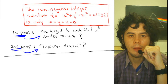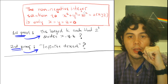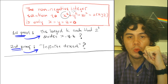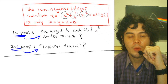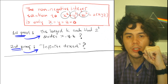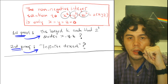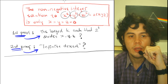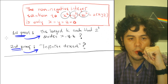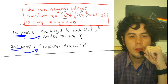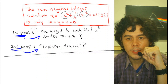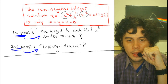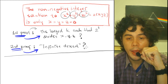Here I have a number theory statement: the non-negative integer solution to x squared plus y squared plus z squared equals 2 times x times y times z is only x, y, and z all equal to 0. That is the only solution to this equation. I will prove this statement using two kinds of proofs. The first one is by noticing the largest k such that 2 to the power of k divides x, y, and z. And the second proof is by infinite descent, which I will explain later.